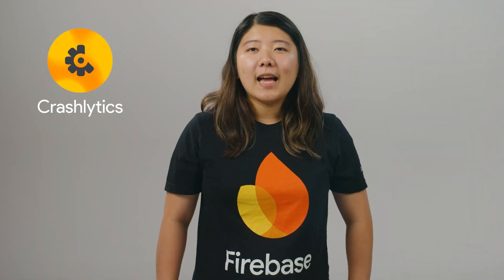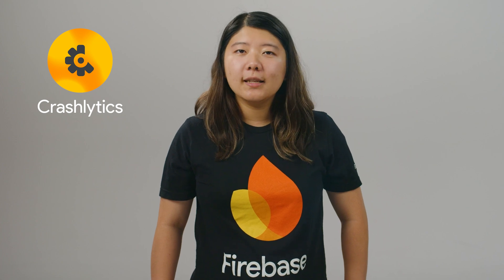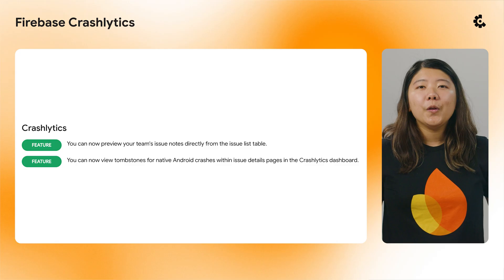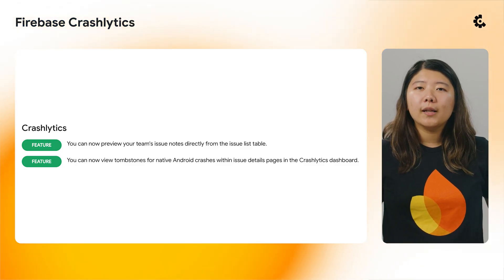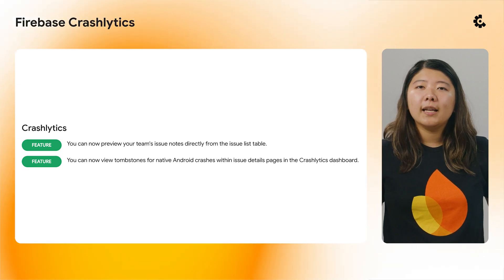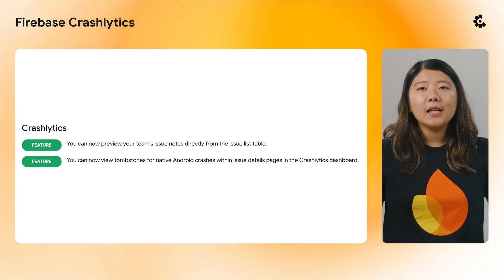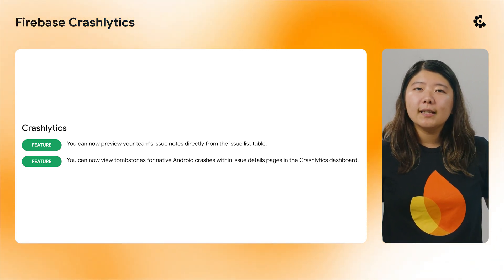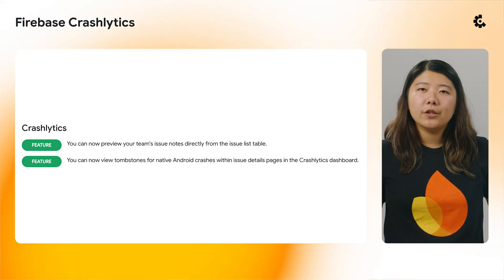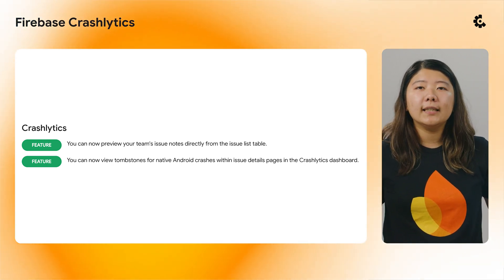The Crashlytics dashboard also received a couple of quality-of-life updates to speed up the debugging process. You can now preview your team's issue notes directly from the main issue list, providing immediate context. Additionally, for native Android crashes, you can now view tombstones within the issue details page to get more insight into memory-related failures.